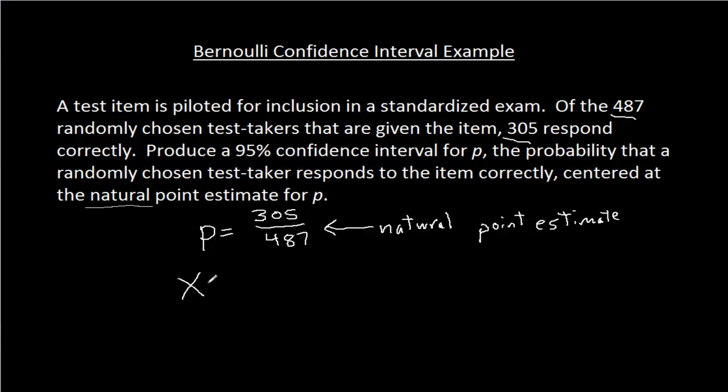Now my random variable here is Bernoulli, so it has values 0 and 1. It has value 1 if the item is responded to correctly, and value 0 if it's responded to incorrectly, or not responded to correctly would be a better way to say it.